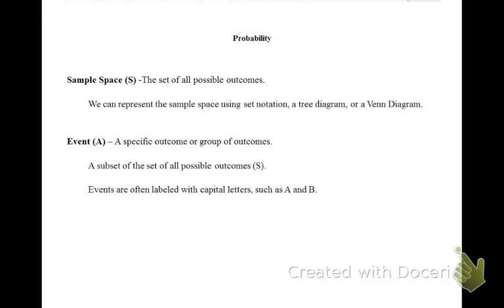Let's start talking about probability. The sample space is the set of all possible outcomes. Oftentimes in an event diagram, you'll see the sample space labeled like this. An event is a specific outcome or group of outcomes within the sample space — it's a subset of the sample space.